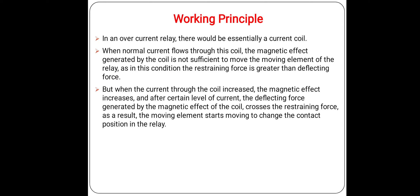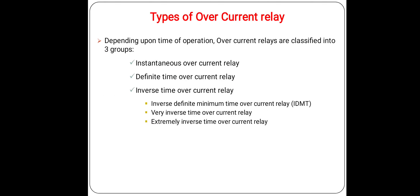But when the current through this coil increases beyond the preset value, the magnetic effect also increases. After a certain value of current, the deflecting force generated by the magnetic effect of the coil exceeds the restraining force. As a result, the moving element starts moving to change the contact position in the relay. There are different types of overcurrent relays, but the basic working principle is more or less the same for all types.